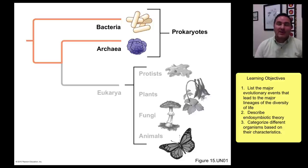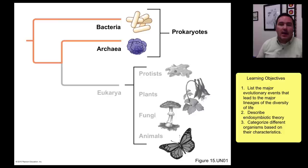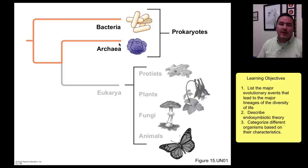Hi, this is Dr. Ognigan. In the last lecture, we saw an overview of some of the major events leading up to the diversity of life on this planet, and we're going to pick it up from there as we look at the three main domains: bacteria, archaea, and the eukarya.